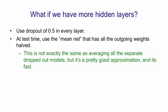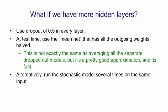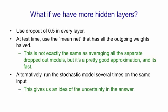When we have multiple hidden layers, this is not exactly the same as averaging lots of separate dropped-out models, but it's a good approximation, and it's fast. We could run lots of stochastic models with dropout and then average across those stochastic models, and that would have one advantage over the mean net: it would give us an idea of the uncertainty in the answer.